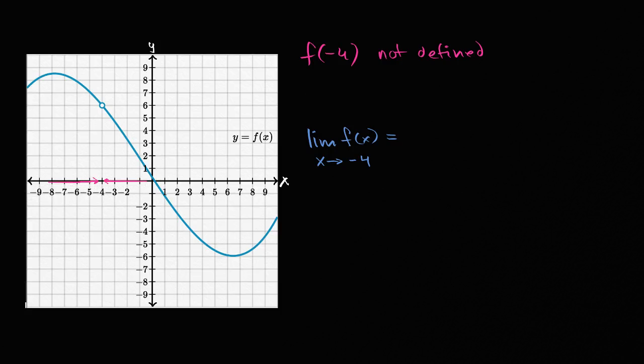Well, let's first think about values greater than negative four. So when x is negative one, this is f of negative one. This is f of negative two. This is f of negative three. This is f of negative three point five.